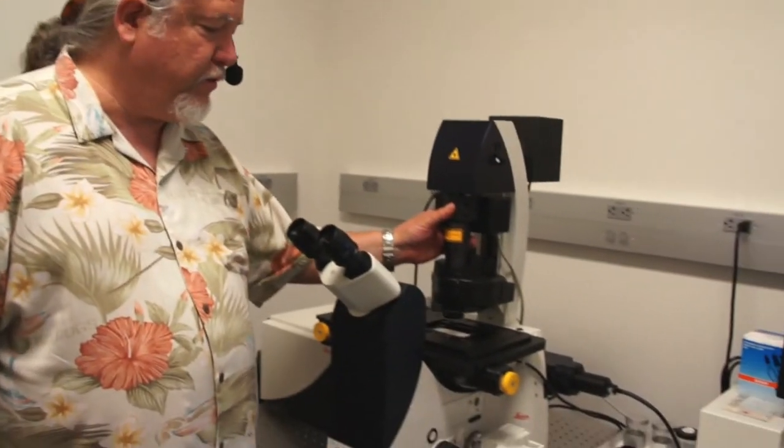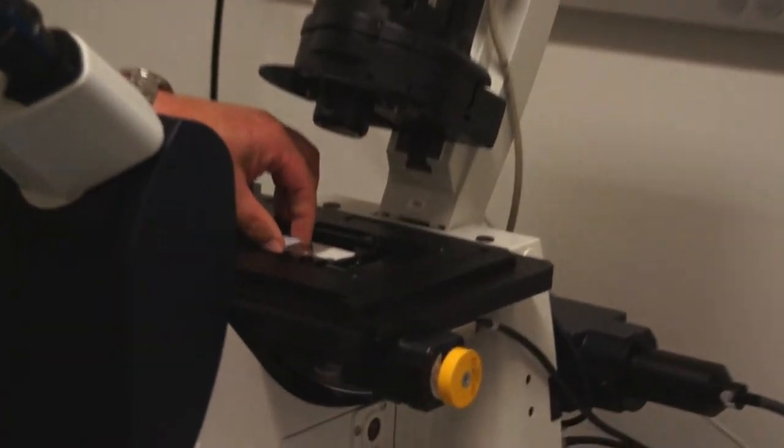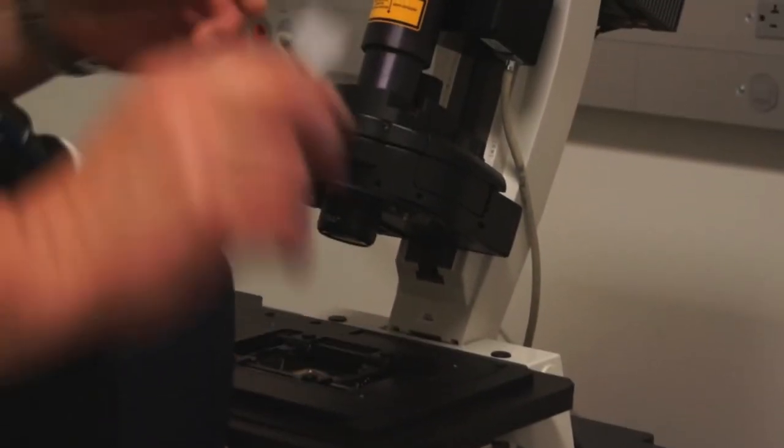Before we end our current session, it's important to follow proper shutdown procedures for using the light microscope. The first thing we do is rotate our condenser out of the way, take our specimen off the stage, and set it aside.